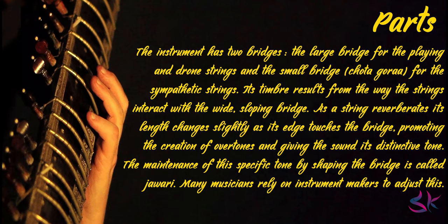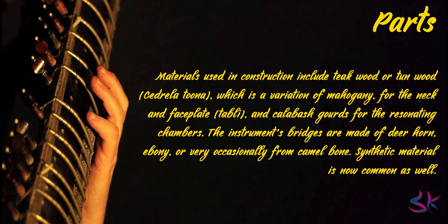The maintenance of the specific tone by shaping the bridge is called Jawari. Many musicians rely on the instrument makers to adjust this. Materials used in construction include Teak Wood or Tun Wood, Cedrella Tuna — a variation of Mahogany — for the neck and faceplate, and Calabash gourds for the resonating chambers. The instrument's bridges are made of deer horn, ebony, or very occasionally from camel bone. Synthetic materials are now common as well.